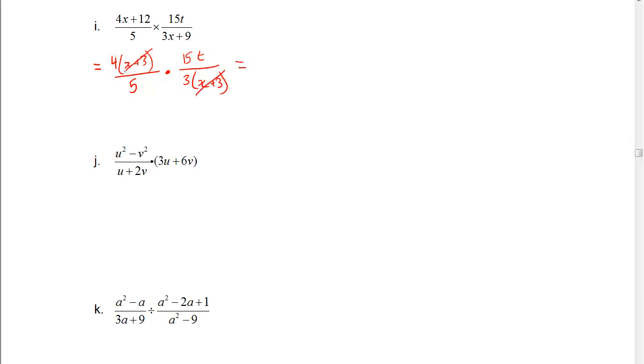15t, and here we have 3 as a common factor outside of x plus 3. Now x plus 3 and x plus 3 is common, 5 and 15 leave 3, and 3 and 3 cancel to leave 1 each, meaning the final answer is simply 4t.